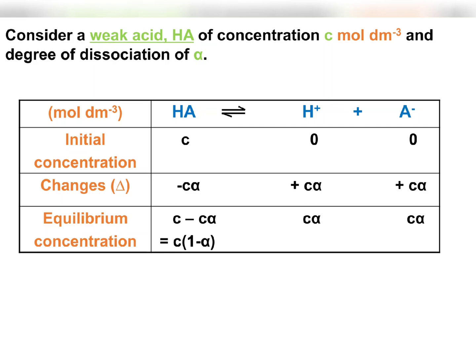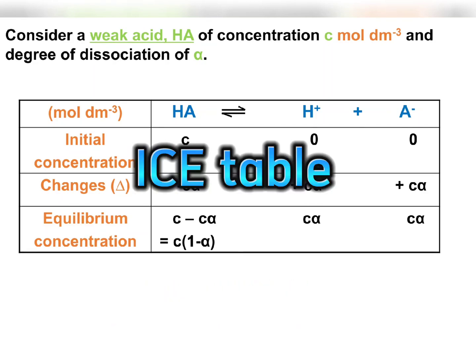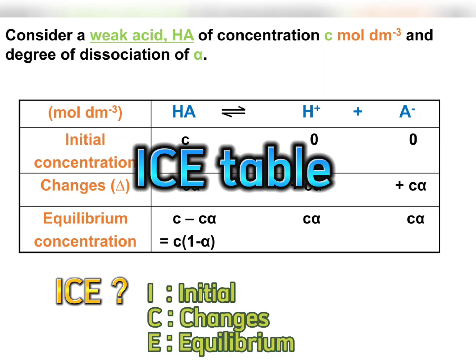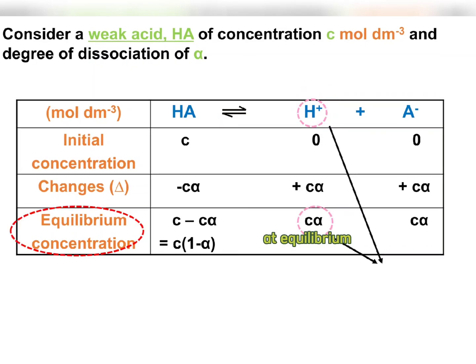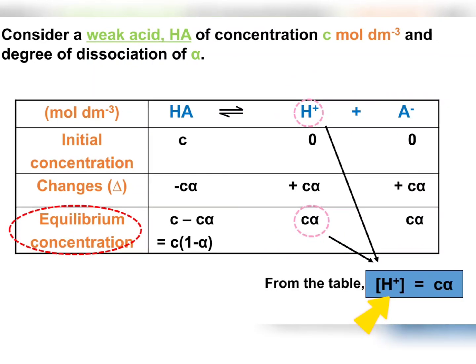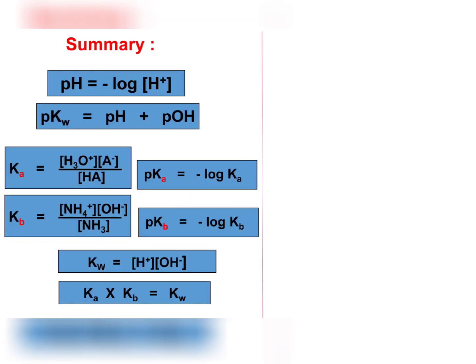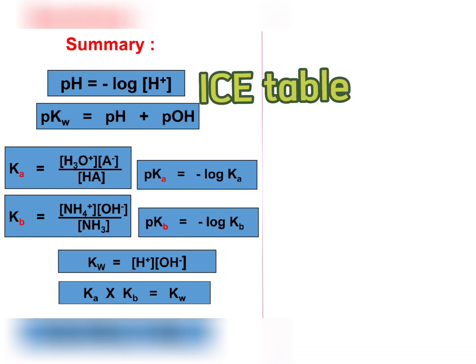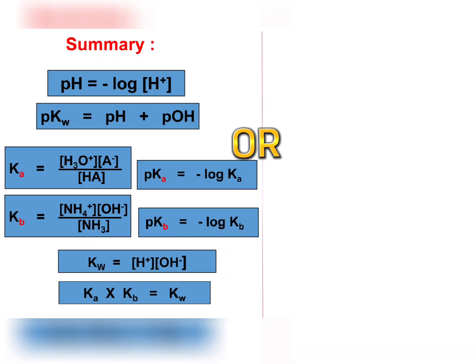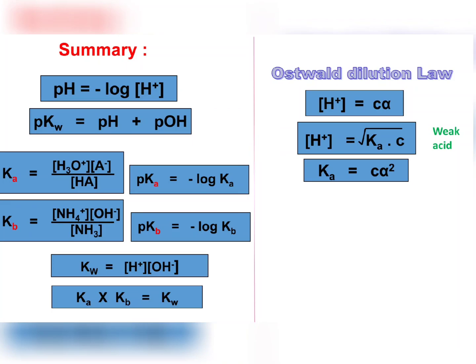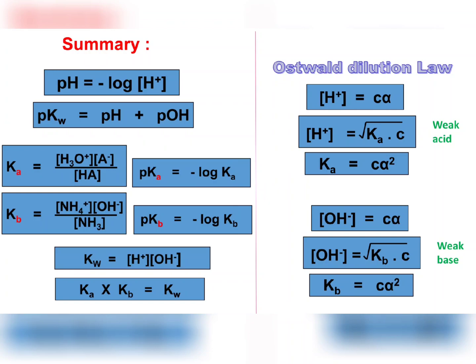To determine the concentration of hydrogen ions dissociated in water, we may refer to the ICE table. From there, the concentration of hydrogen ions is equal to Cα. My dear students, always bear in mind that if we want to calculate the pH value of weak acids or weak bases, we may use the ICE table or use the derived equations to determine the concentration of hydrogen ions. Lastly, we substitute that value into the pH equation.